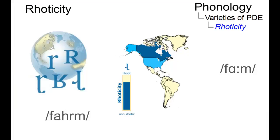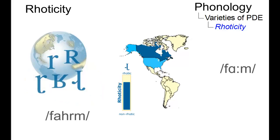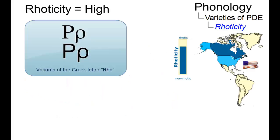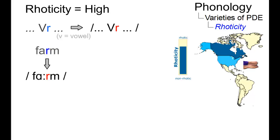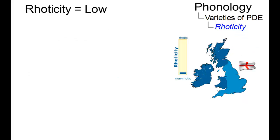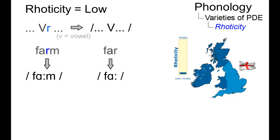A fundamental phonological division of English varieties depends upon a difference in the phonotactic distribution of the consonant R. In accents with a high degree of rhoticity, the R is often overtly realized in a wide variety of phonetic contexts, including post-vocalic environments such as 'farm' or 'far'. In accents that exhibit a low degree of rhoticity, R is not used in most post-vocalic environments — thus we get both 'farm' and 'far' without a post-vocalic R.